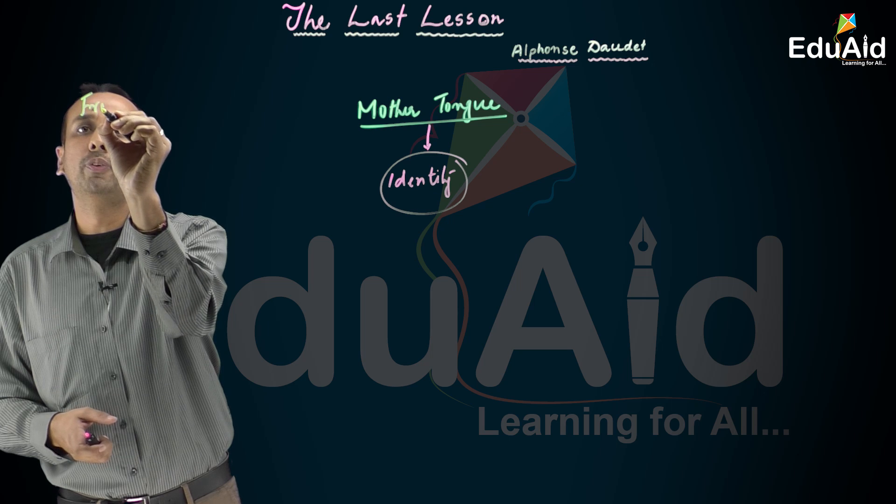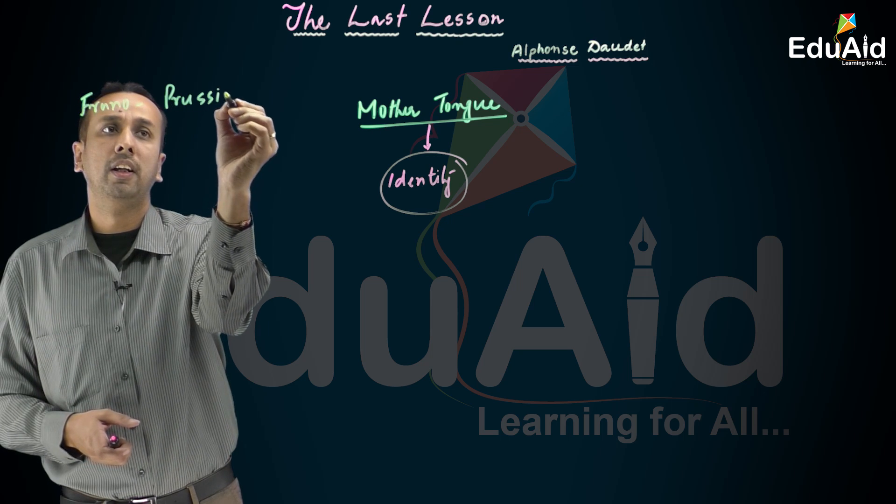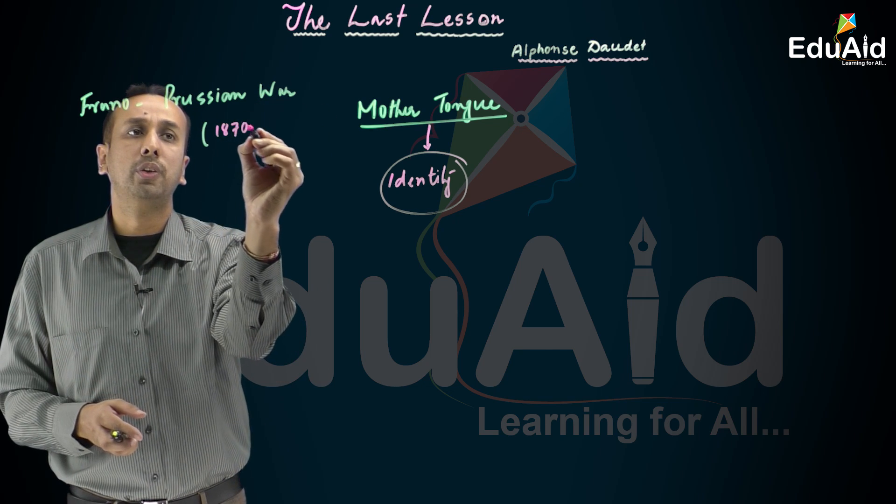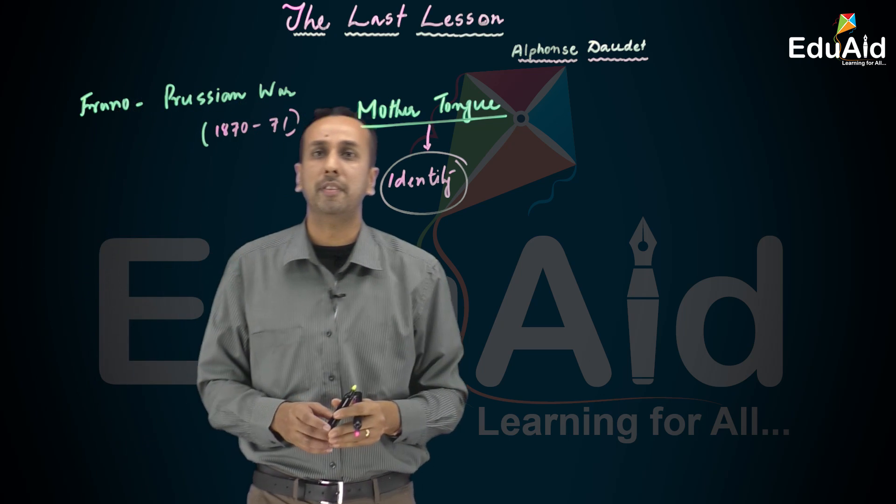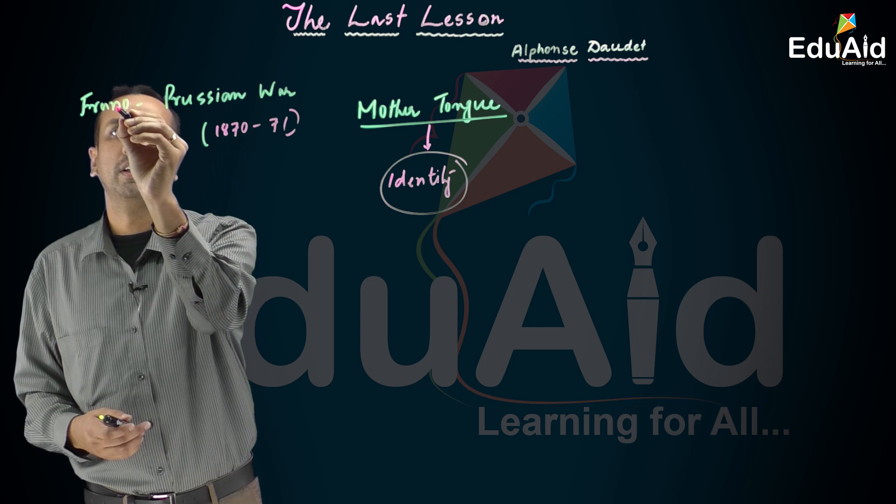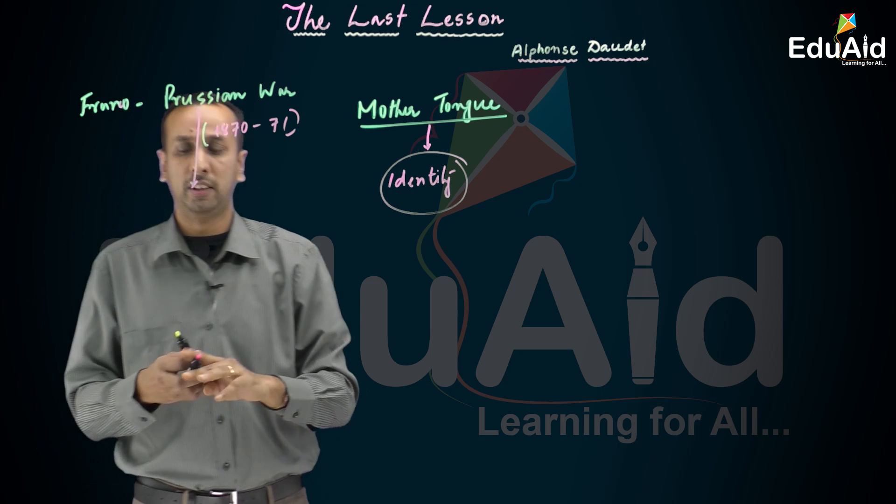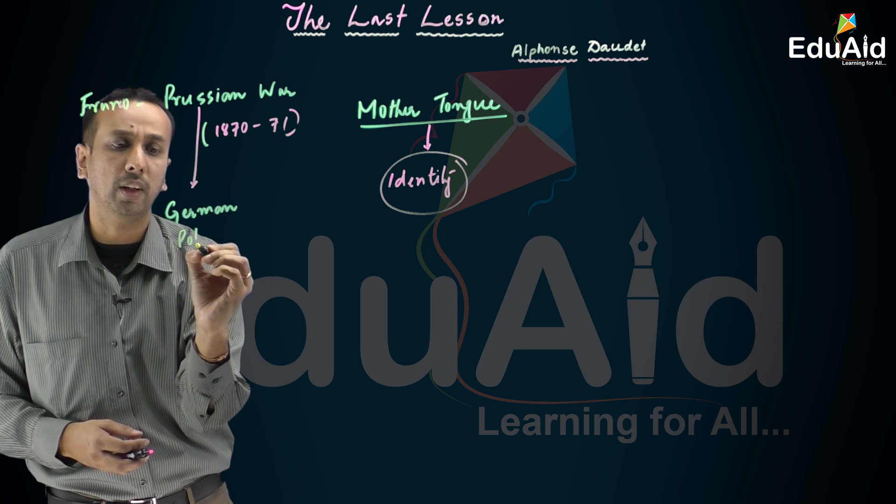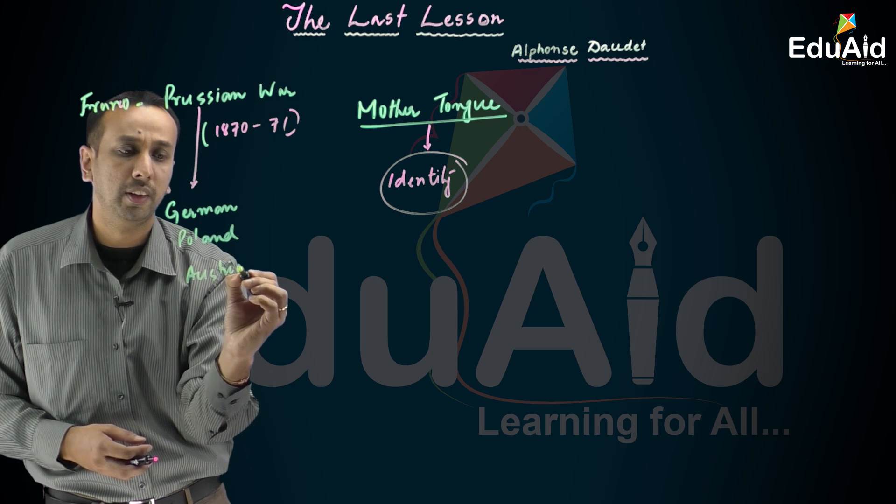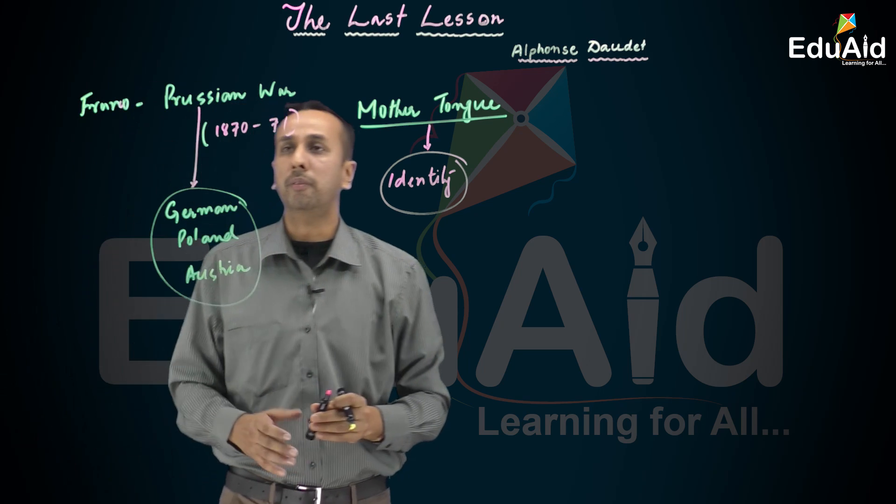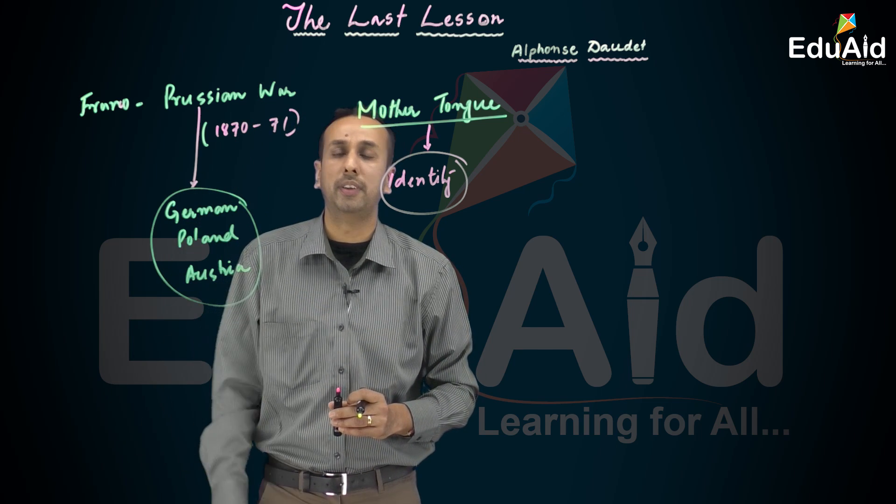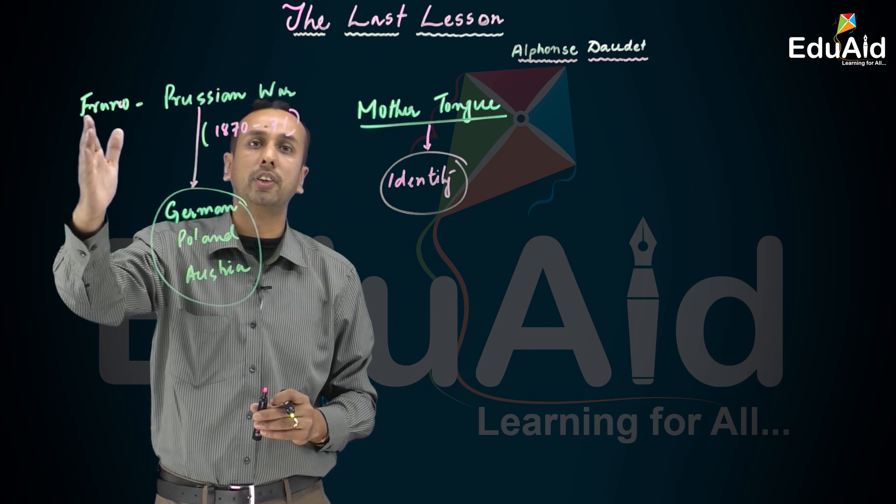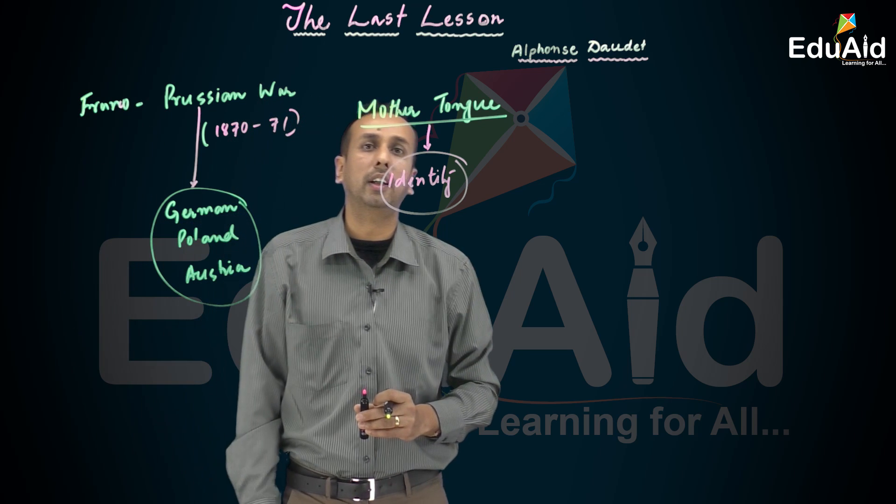This story deals with the historical fact of the Franco-Prussian War, 1870-71. The Prussian army, primarily Germany, Poland, and part of Austria, these three formulated the Prussian group. The Prussian army attacked France and defeated France.